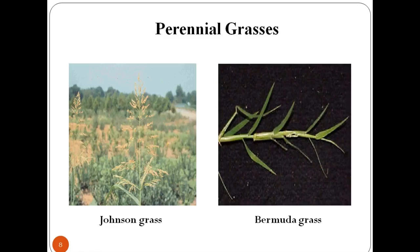A perennial is a plant which lives for many years and does not die after flowering. All perennials have underground parts that store food over the winter and allow them to re-emerge in the spring. One way to tell if a weed is a perennial is to dig it up and look for these underground parts.